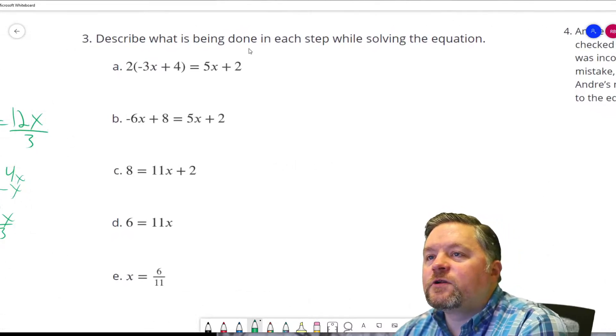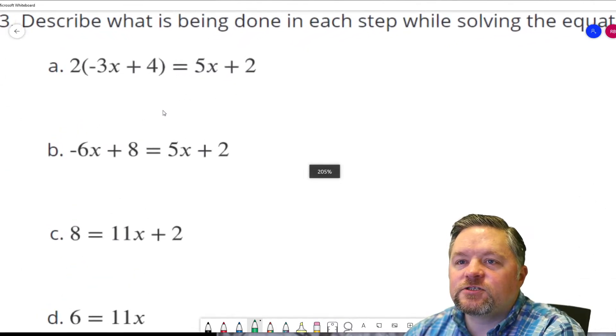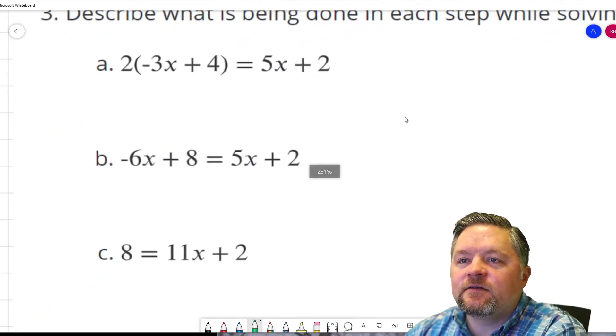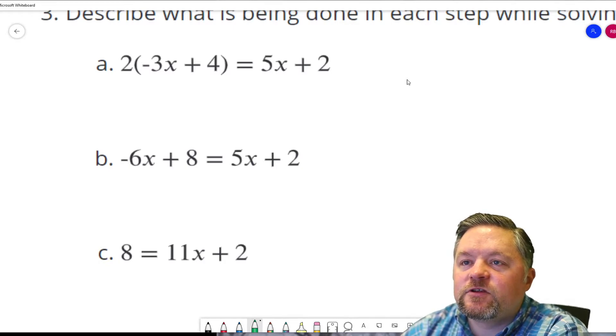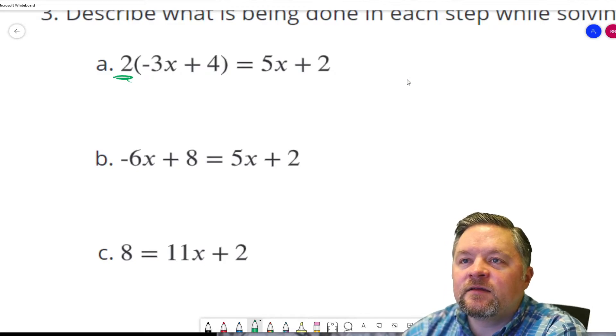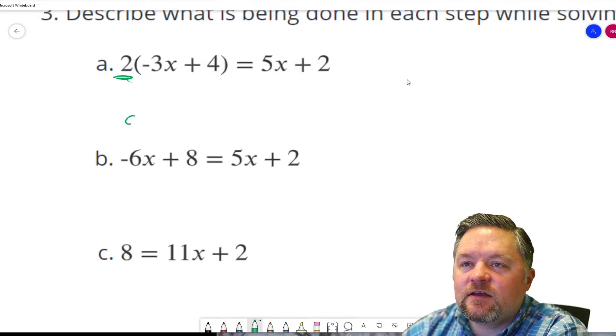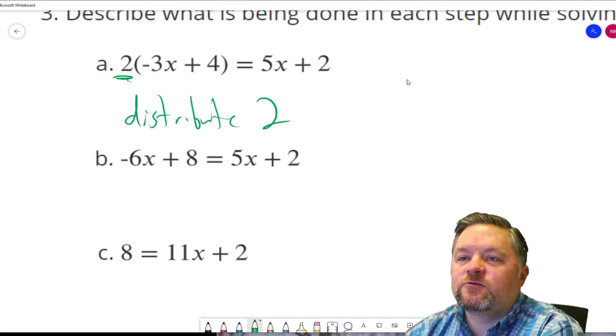Describe what is being done in each step while solving the equation. So if we're describing what they did, it looks like the first thing they did was distribute the 2 because this 2 went away. And 2 times negative 3x is negative 6x. They distribute the 2.